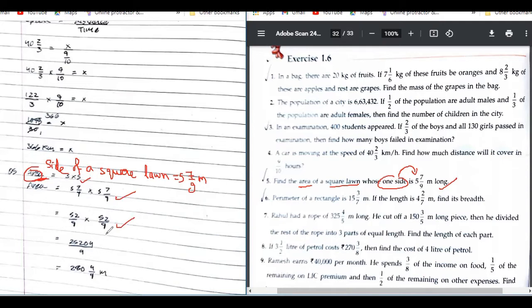Okay, 52 into 52. First of all, just check this part, this calculation. 52 into... yes, and 9 into 9, it should be 81. So just check 52 into 52 also - this is looking very big.